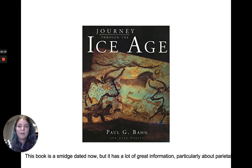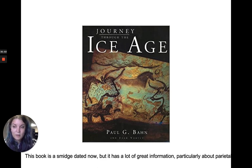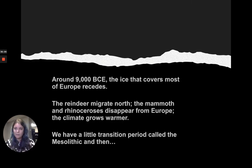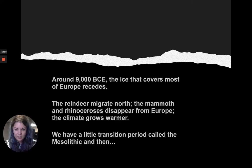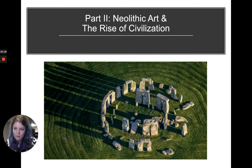This is a book I recommend for more information — it's a little dated and very Eurocentric, focused mostly on Western Europe, but it has really great information particularly about parietal art and cave painting. So I'm going to stop here, and we'll come back and talk about Neolithic art next time. Just to set you up: around 9,000 BC, the ice covering most of Europe recedes, the reindeer migrate north, the mammoth and rhinoceros disappear from Europe, and the climate grows warmer. We have a little transition period called the Mesolithic era, and then Neolithic art and the rise of civilization.